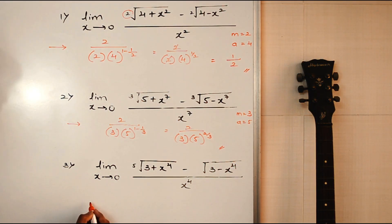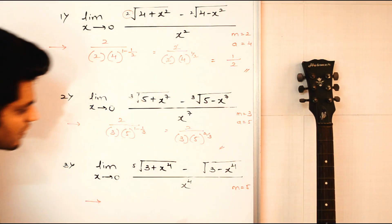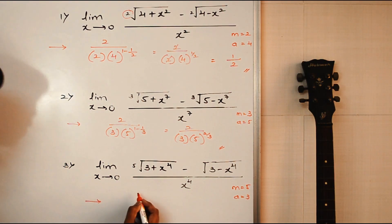And similarly for the last one, m value is 5 and a value is 3. So this will be 2 upon m into a raised to 1 minus 1 by m.